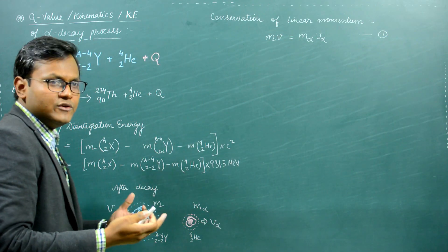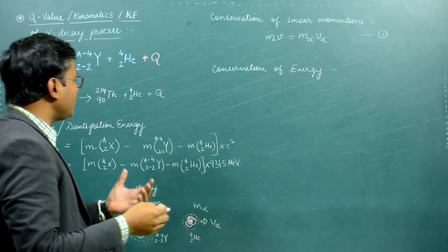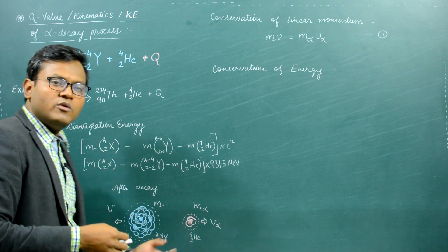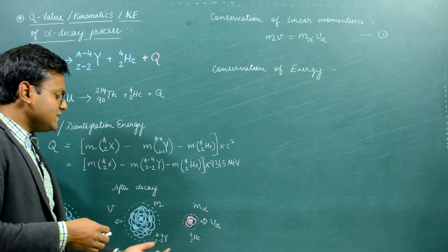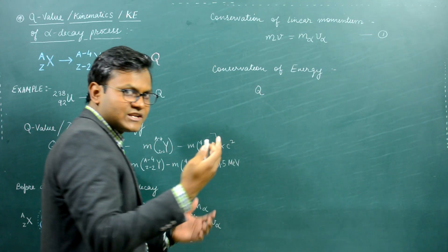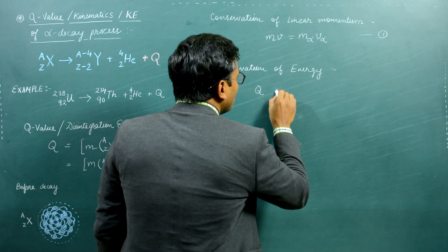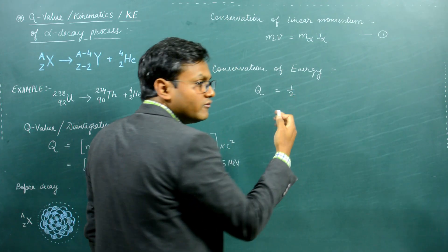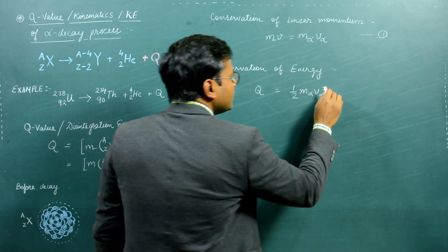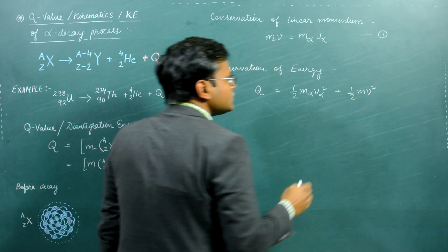We can also apply the conservation of energy principle. The total energy released in the nuclear reaction goes off as kinetic energy of the two products. The Q value, calculated from the mass defect, equals the kinetic energy of the alpha particle — half M_alpha·V_alpha² — plus the kinetic energy of the daughter nuclei — half M·V².